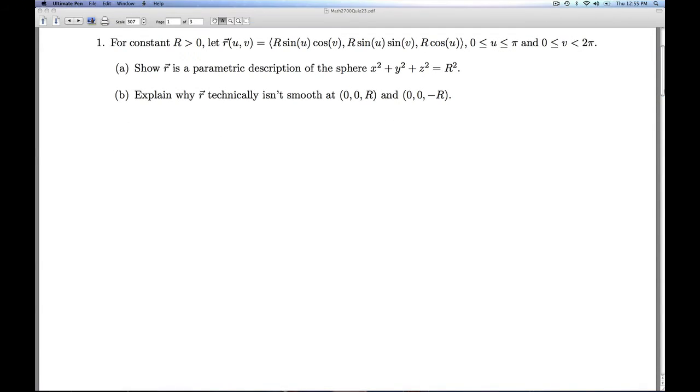For a constant r bigger than 0, we're given a vector-valued function which is going to trace out a surface. This is a parametric surface in terms of u and v. We're given bounds on u and v. We're asked to show that r is a parametric description of the sphere x squared plus y squared plus z squared equals r squared.